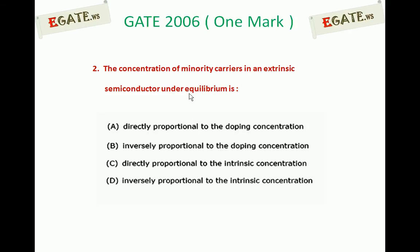The concentration of minority carriers in an extrinsic semiconductor under equilibrium is: a. Directly proportional to doping concentration, b. Inversely proportional to doping concentration, c. Directly proportional to intrinsic concentration, d. Inversely proportional to intrinsic concentration.